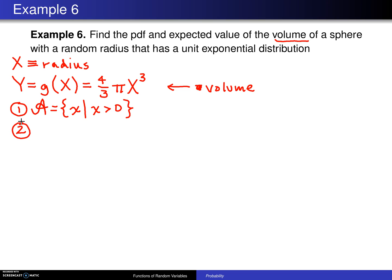Step two is to find the probability density function of X. Well, it says that the random radius has a unit exponential distribution. The word unit means it's exponential with a mean or a rate of one. So in this case, f sub X of x—and don't forget the subscript here because we're going to have two different random variables running around in the problem—is e to the minus x.